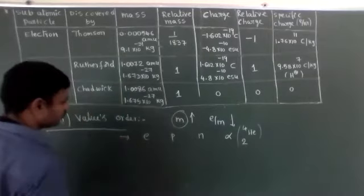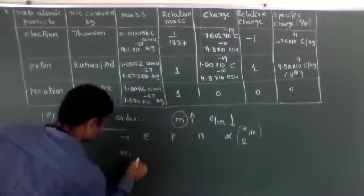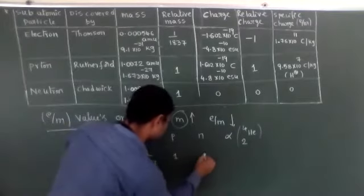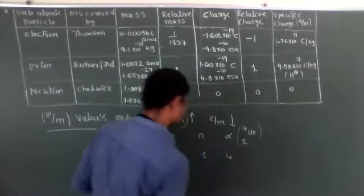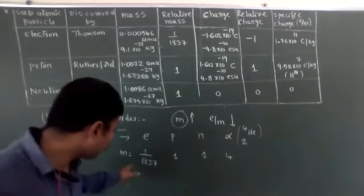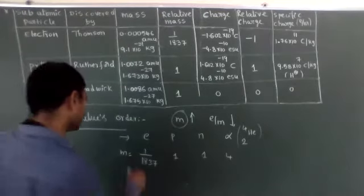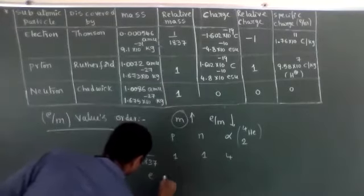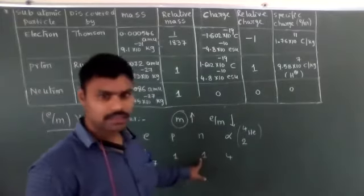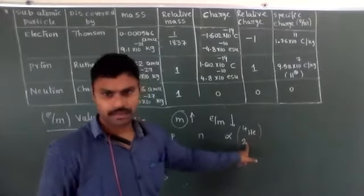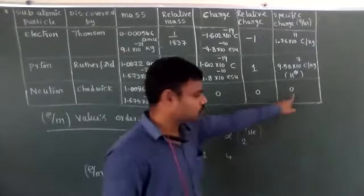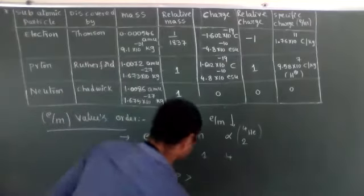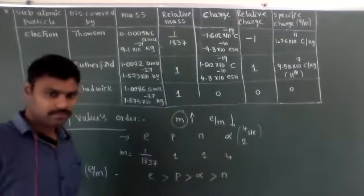For electrons the relative mass is 1/1800, which is very small compared to protons, neutrons, and alpha particles. Among all four, electrons have the lowest mass value - so their E/M value is highest. Neutrons have mass but their charge is 0, so their E/M is always 0. Protons have more E/M than alpha particles.